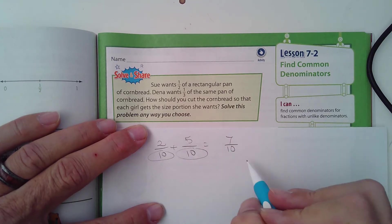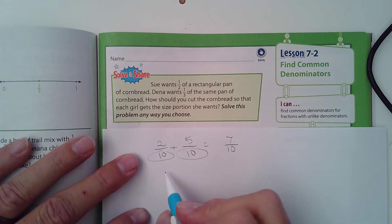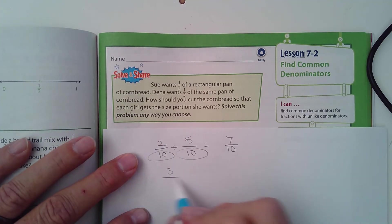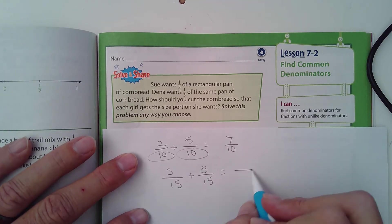Give you another example. What if I had, let's say, 3/15 plus 8/15? Could I add those together? Yeah, I sure can. The denominator is the same, it's 15. That doesn't change. Three and eight is 11, so it's 11/15.